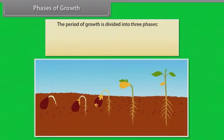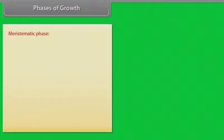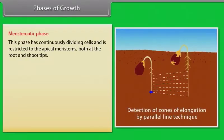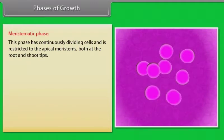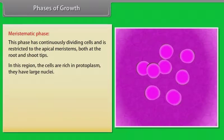Phases of growth. The period of growth is divided into three phases: meristematic, elongation and maturation. Meristematic phase: this phase has continuously dividing cells and is restricted to the apical meristems, both at the root and shoot tips. In this region, the cells are rich in protoplasm. They have large nuclei.